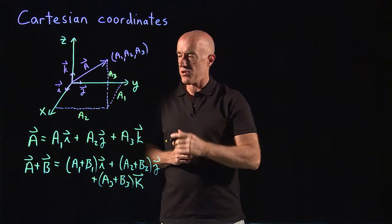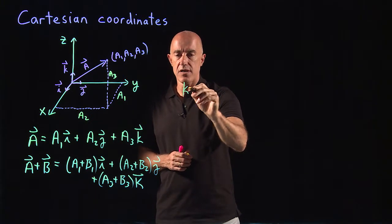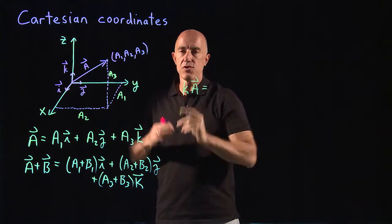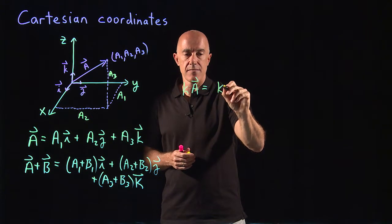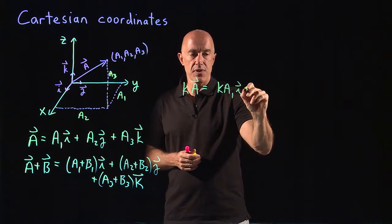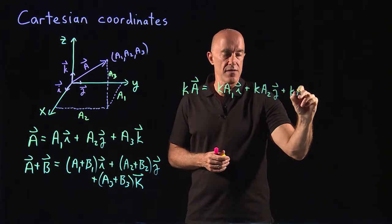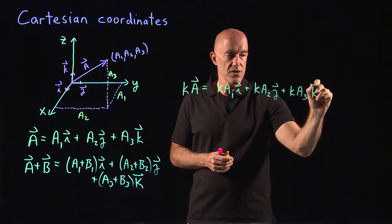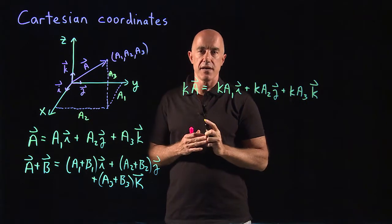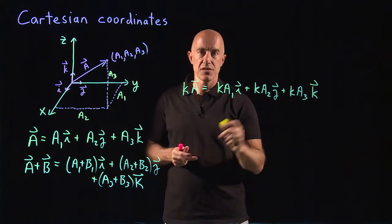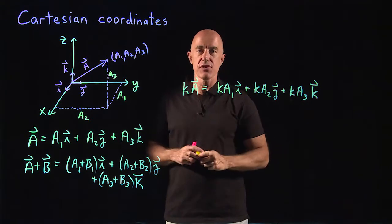What about scalar multiplication? So we can have a k, a scalar times a vector. All that you do then is you multiply each component by k. So we would have k times a1 times i, plus k times a2 times j, plus k times a3 times the unit vector k. So here k is a scalar, this k here is the unit vector, so don't be confused with that notation. Sorry, I should have chosen a different constant.